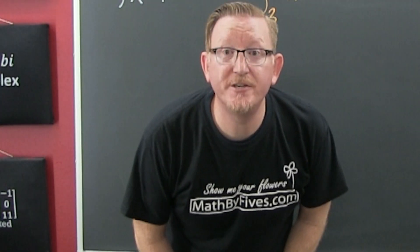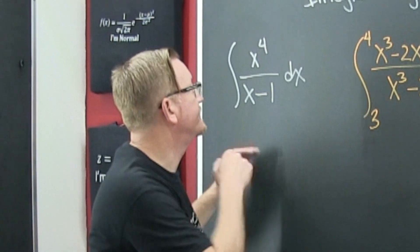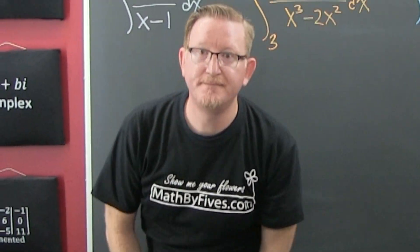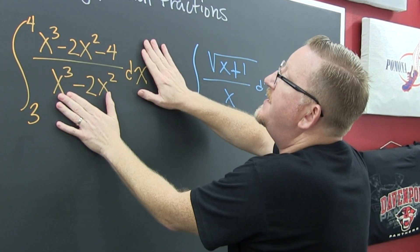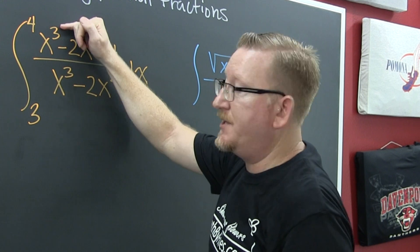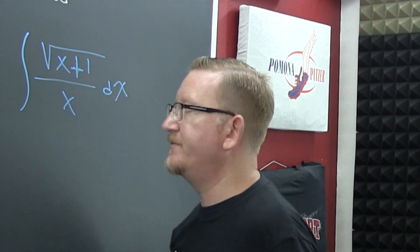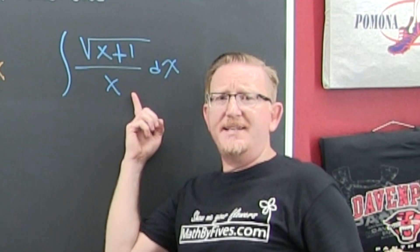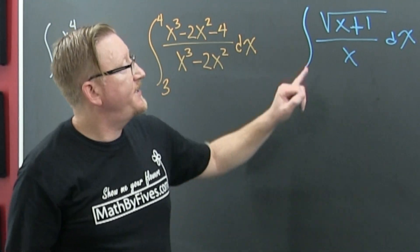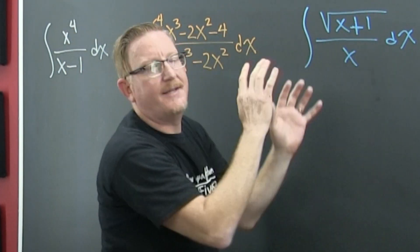Whenever you're first presented with an integration problem, you look at the powers of the numerator and denominator. If the denominator has a larger degree, you're going to start with division. This one has the same degree numerator and denominator, so start with division — that'll separate things. And then you'll separate that fraction further. This one here looks like it's by parts, and you might be able to do it by parts, but there's also a fancy substitution where you let the numerator represent everything, and then there's more after that.